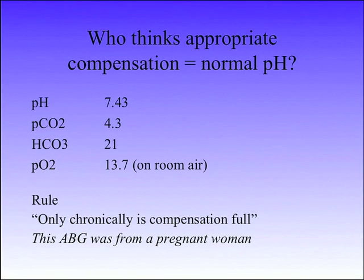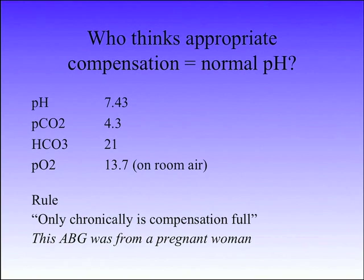Acutely, you never have a normal pH when you have an acid-base disturbance — unless there is no acid-base disturbance. So if you've ever got a normal pH, you actually have a mixed process.